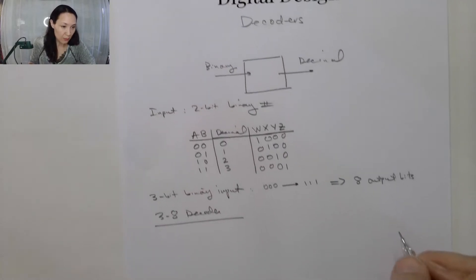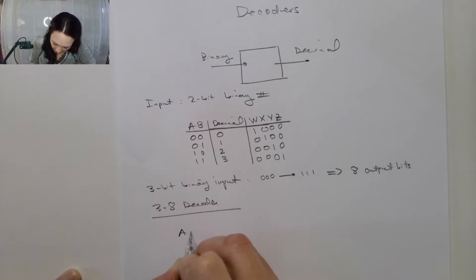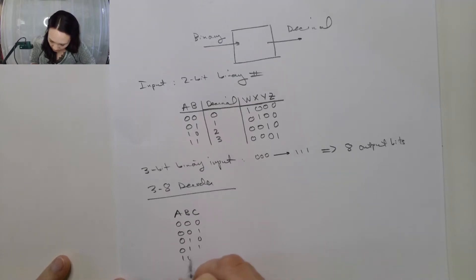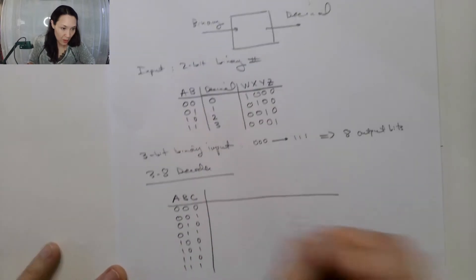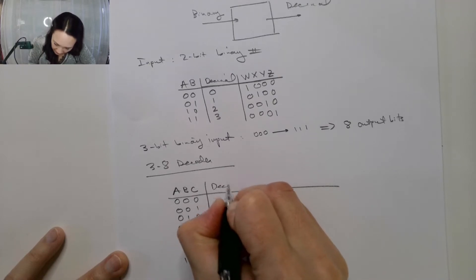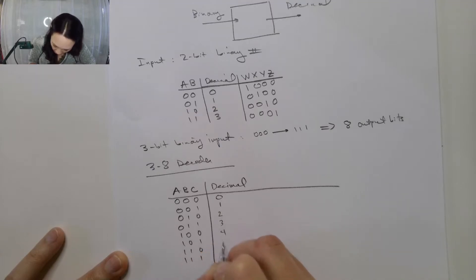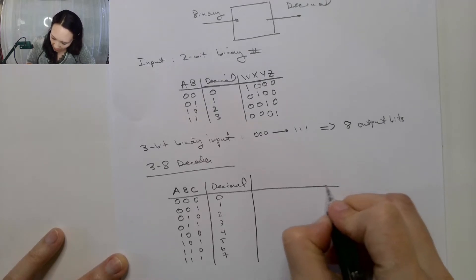Let me show you the truth table for the 3-to-8 decoder. Our inputs A, B, C scroll between 000, 001, 010, 011, 100, 101, 110, and 111. If we decode this binary input in decimal, those would be the numbers 0, 1, 2, 3, 4, 5, 6, 7 — so we're going to need 8 different outputs.